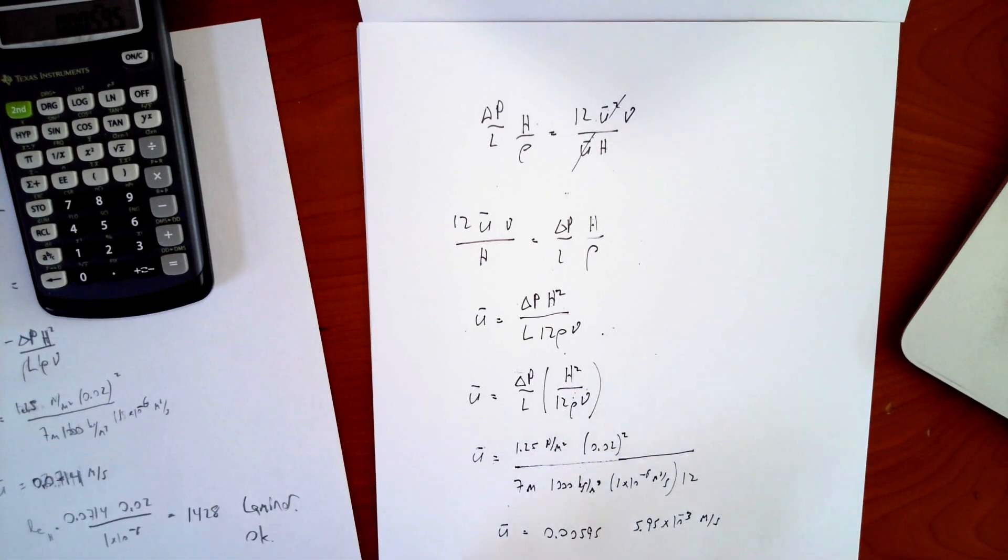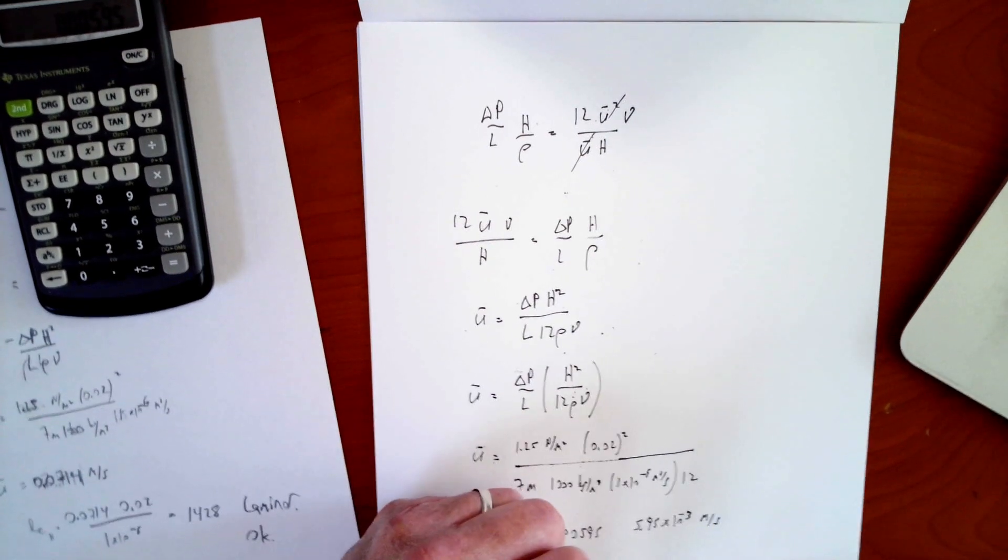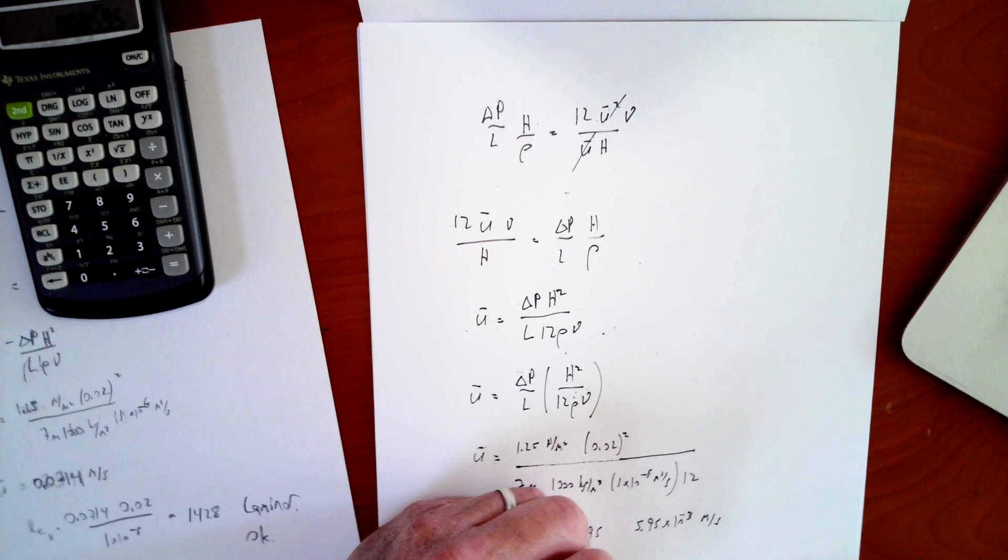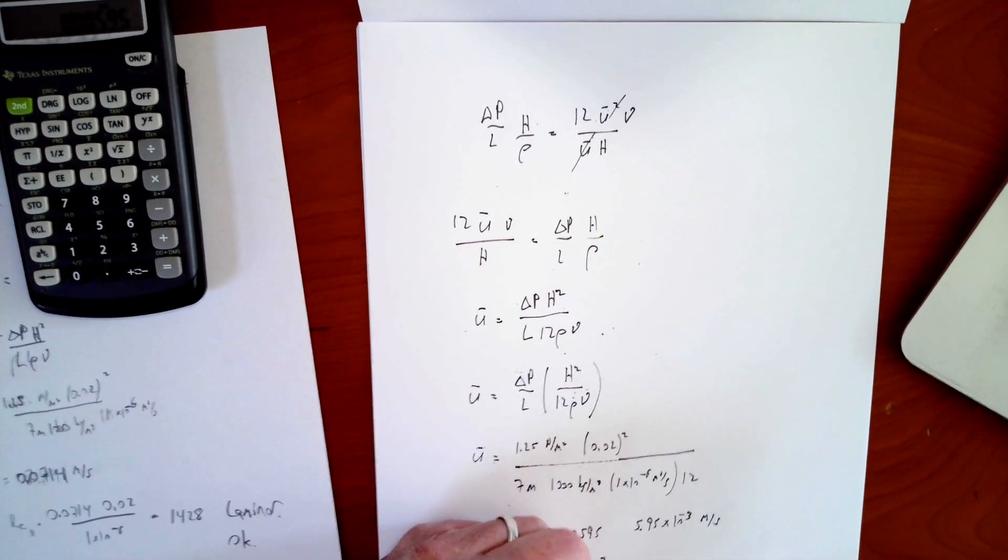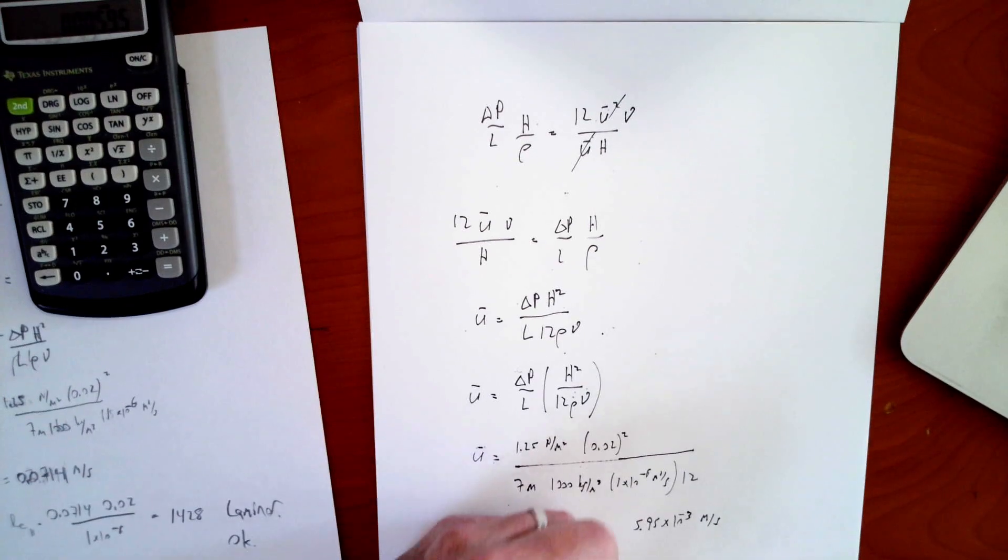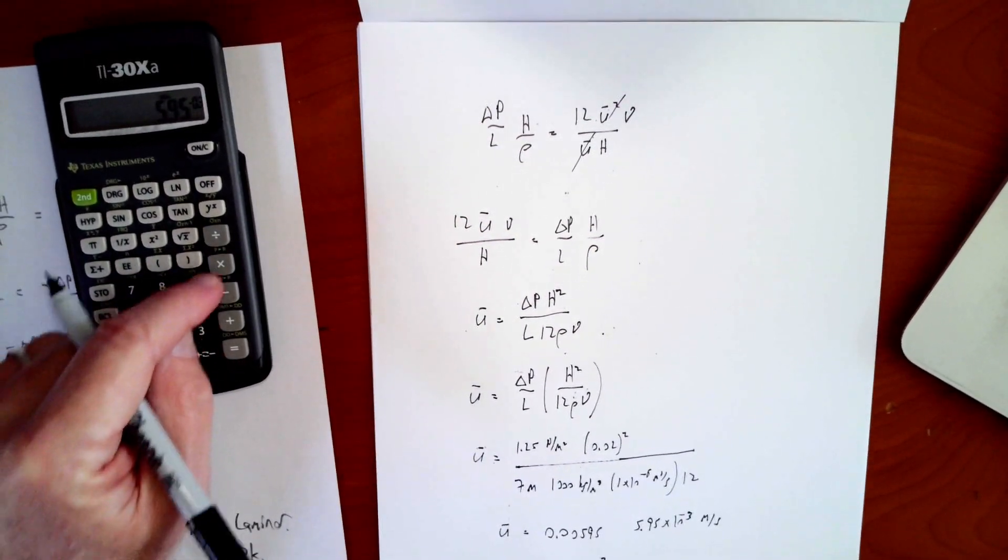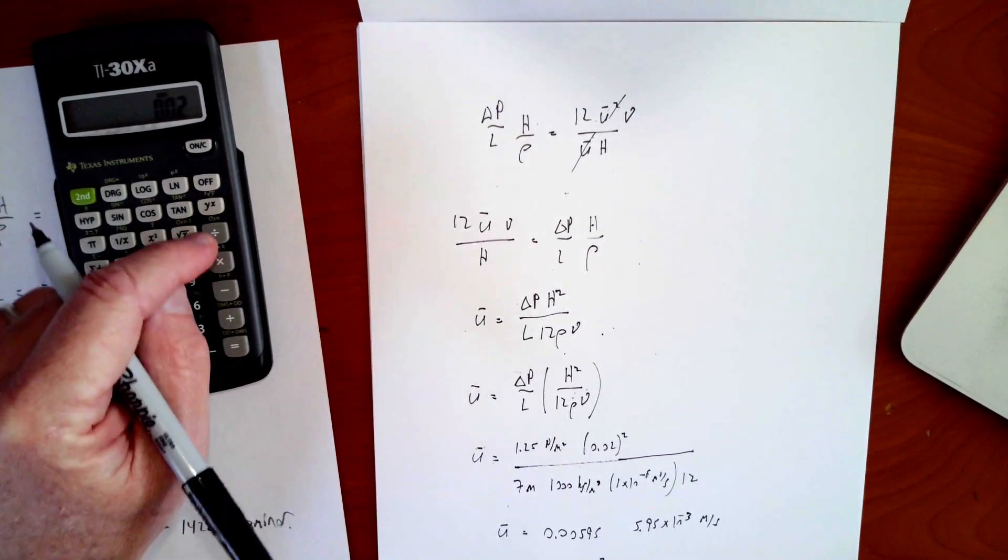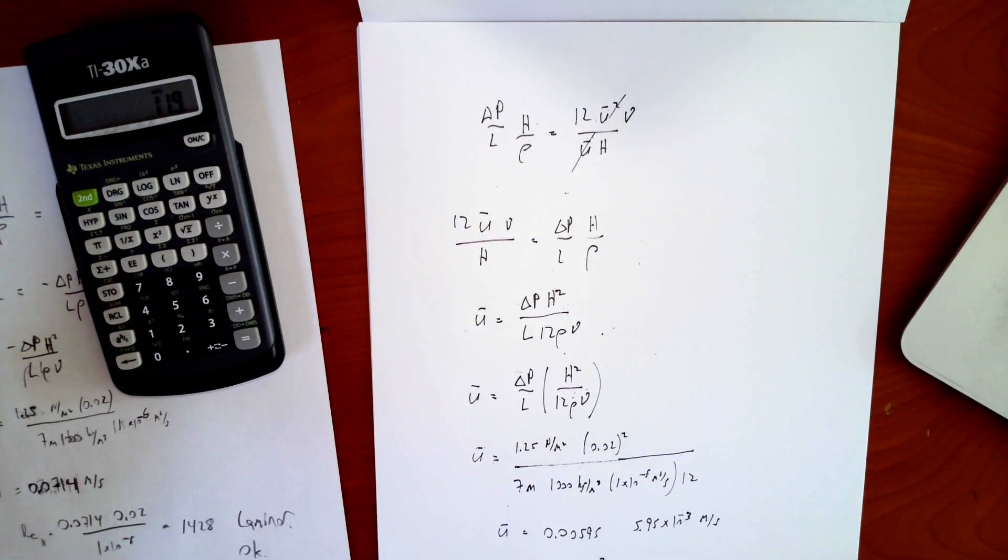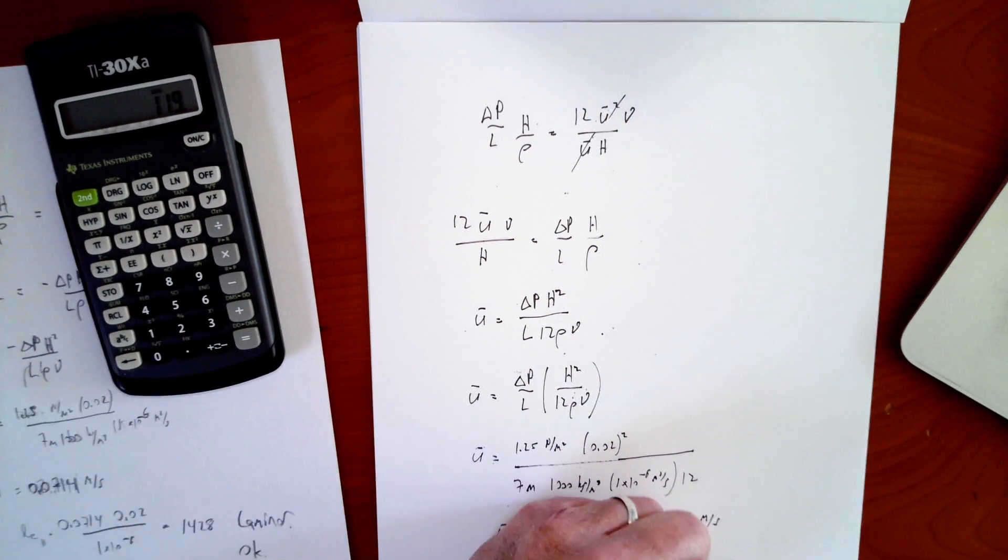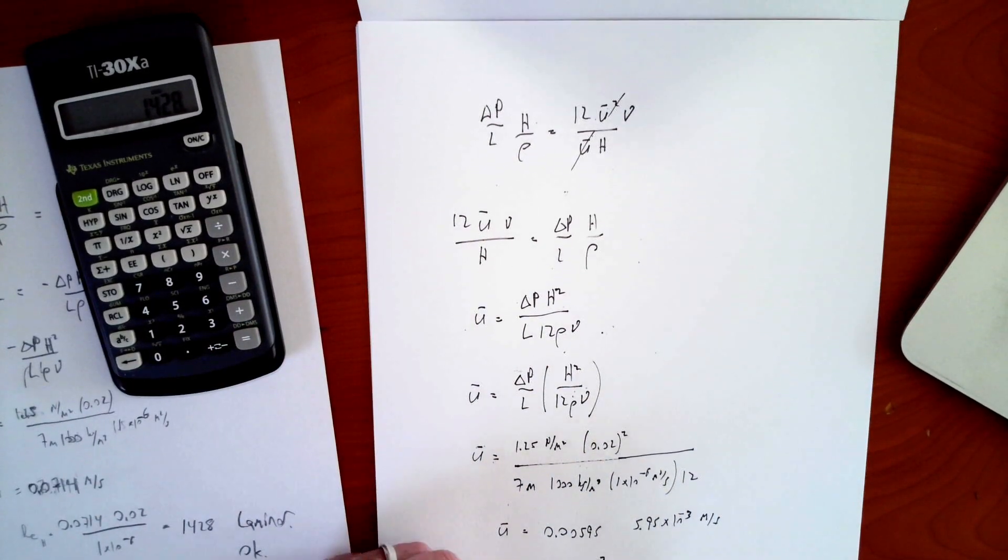And then we'll check our Reynolds number. So our Reynolds number here based on H, 5.95 times 10 to the minus 3 is my velocity times my H is 0.02 divided by 1 times 10 to the minus 6 meters squared per second. And that gives me 119. So that's solidly laminar. So that should be okay. So I'm good. I'm in the laminar regime.